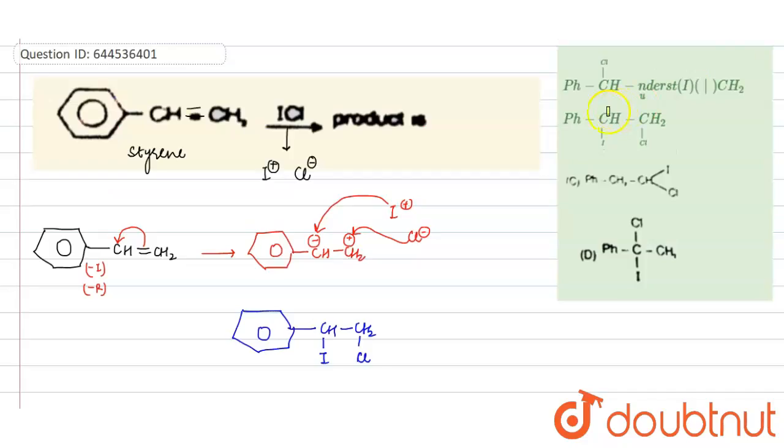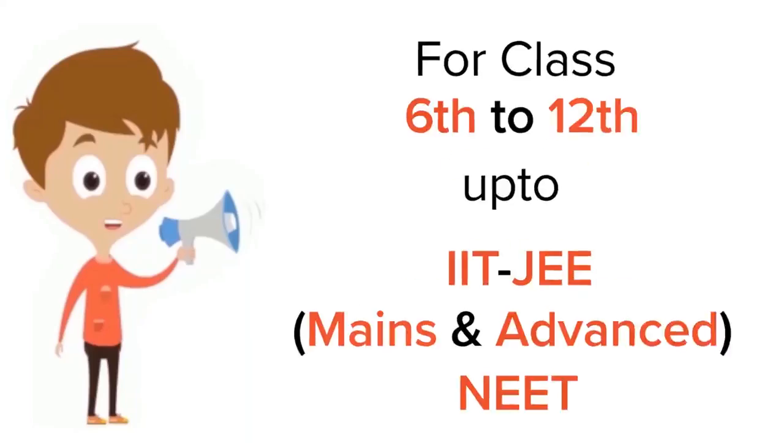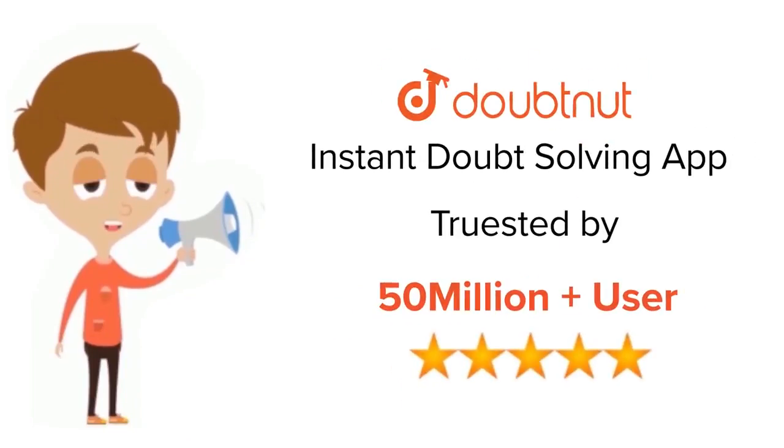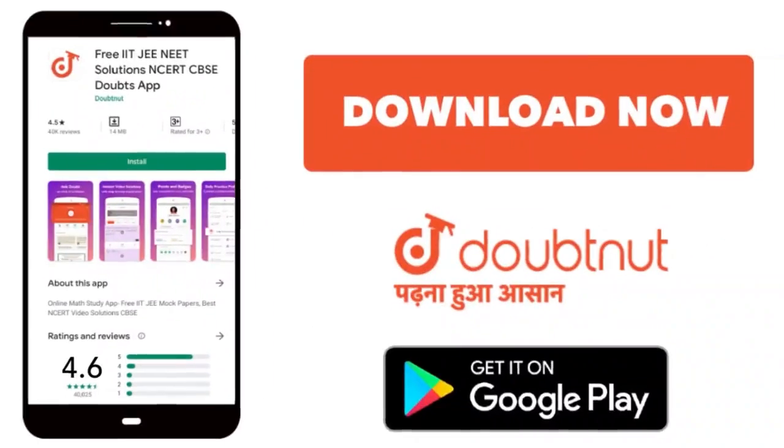So clearly your B option is correct answer. For class 6th to 12th, IIT-JEE, and NEET level, trusted by more than five crore students, download Doubtnet today.